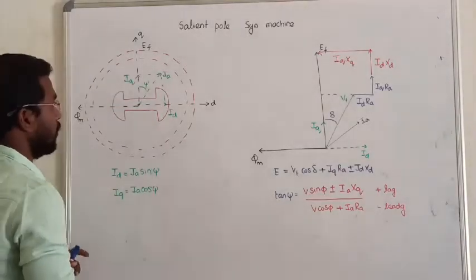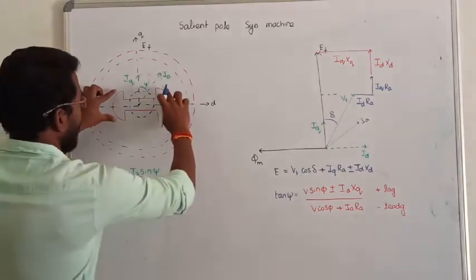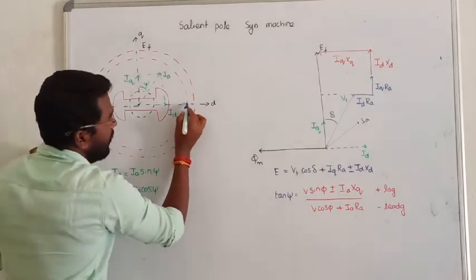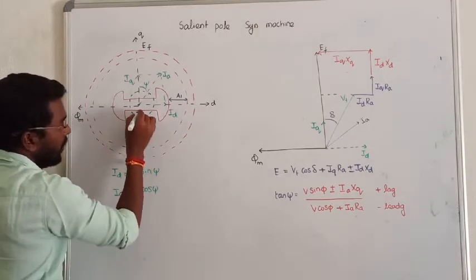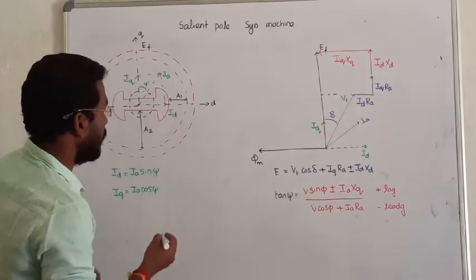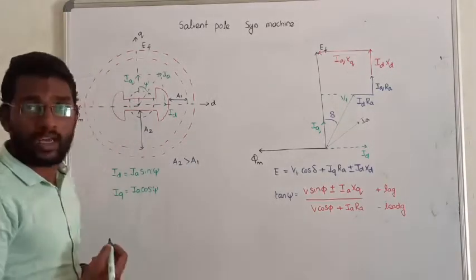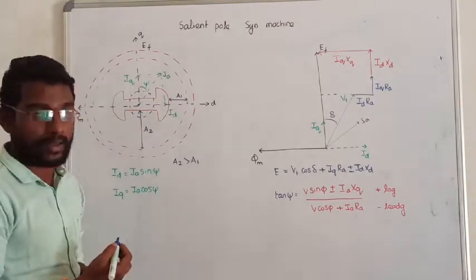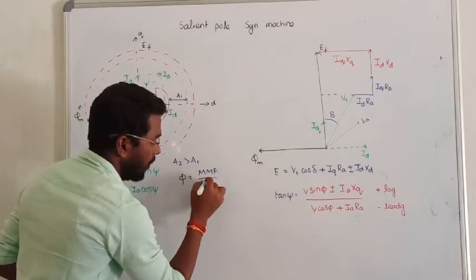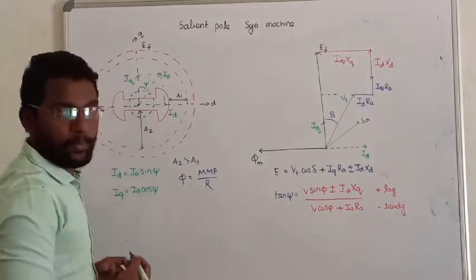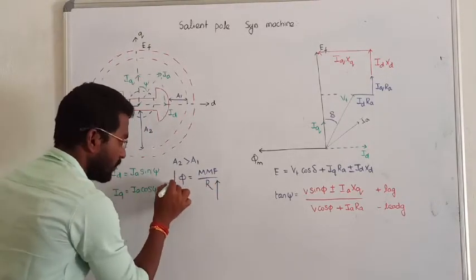In the salient pole machine, there is a certain air gap between the stator and the rotor. Let me call one air gap as A1 and another air gap as A2. Observing both, air gap A2 is greater than A1. Now, we know flux can be written as MMF divided by reluctance R. If you have more air gap length, the reluctance offered by the machine will increase, and if reluctance increases, then the flux will decrease.